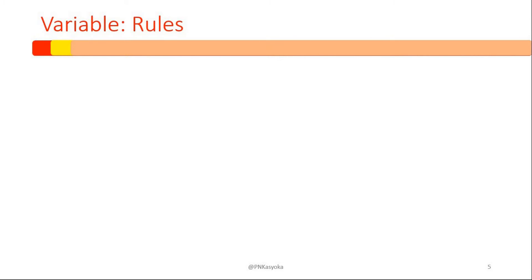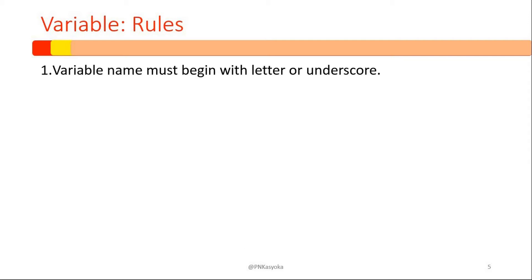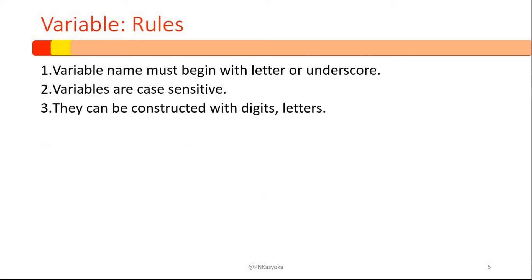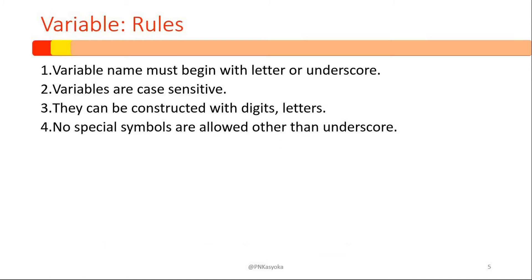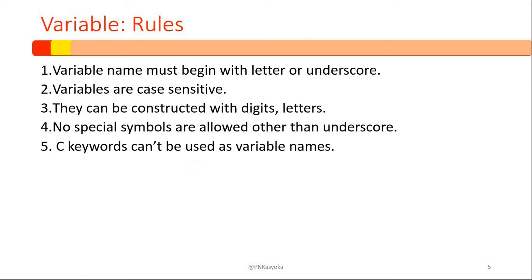Now let's look at important rules one needs to consider when creating variables. Number one, a variable name must begin with a letter or an underscore. Two, variables are case sensitive. If we declare in uppercase, we will always make reference to that same variable in uppercase, and the same applies for lowercase. They can be constructed with digits and letters. No special symbols are allowed other than underscore.